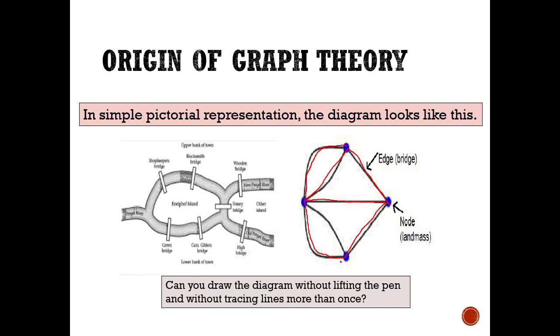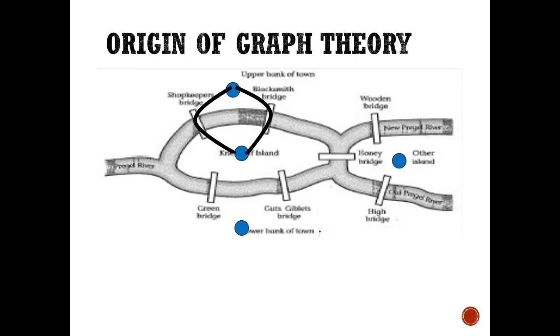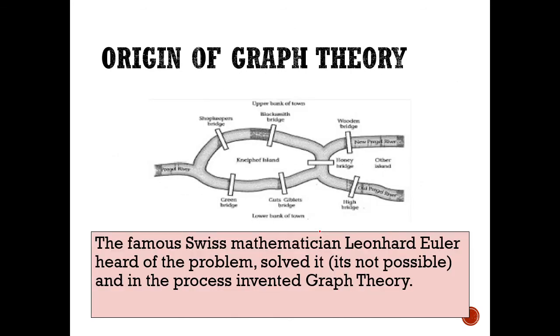So notice that no matter how hard you try you cannot draw this diagram without lifting the pen and without tracing line segments more than once. So this is how Euler provided a solution to the problem on crossing the seven bridges exactly once and ending up where you started. So this ends the overview and the origin of graph theory. For the next video we will discuss some concepts that are important in order to solve the shortest path problem or the fastest route problem.